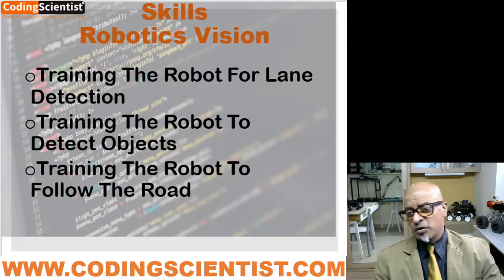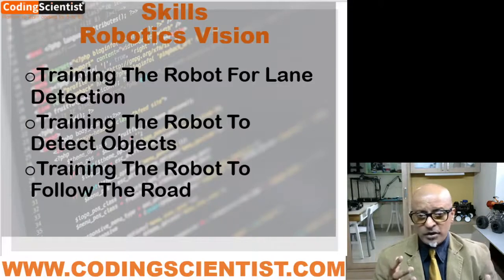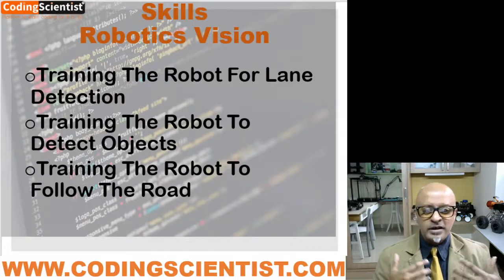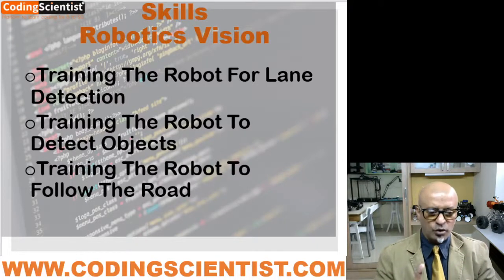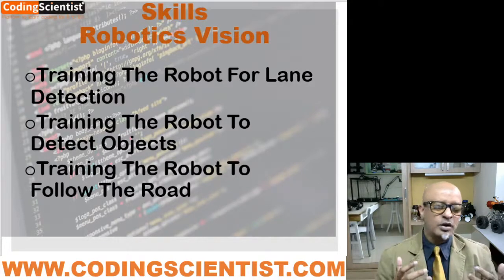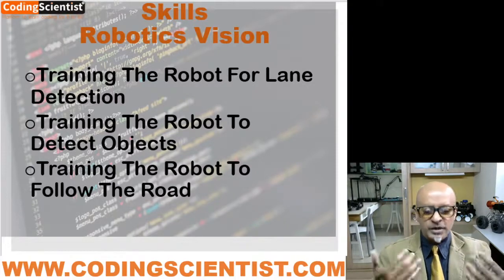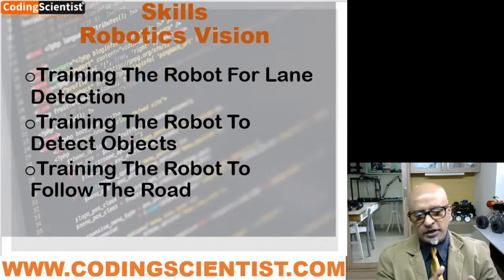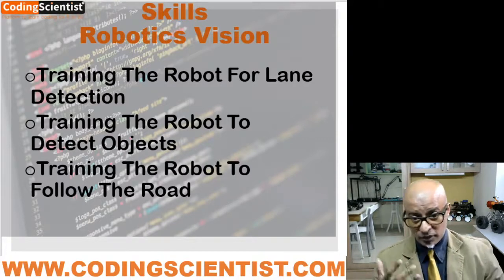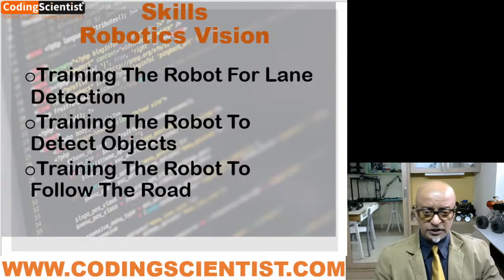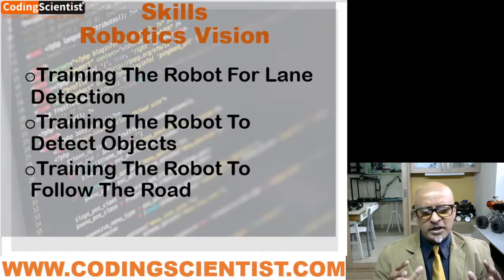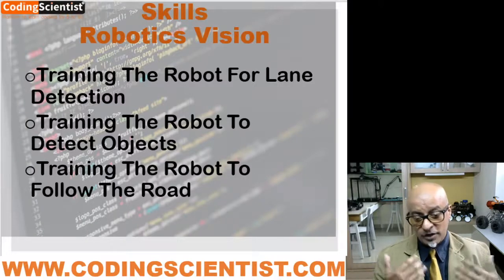For robotics vision, your JetBot is going to get trained to follow a lane on the road — just like the lanes you see on a road. The robot will also be trained to detect different types of objects on its path, sending you information about what kind of object has been detected and whether to avoid or override it. You will also make your JetBot follow a road, so by the end of this course you will have built a kind of autonomous robot, or you can call it a self-driving car.